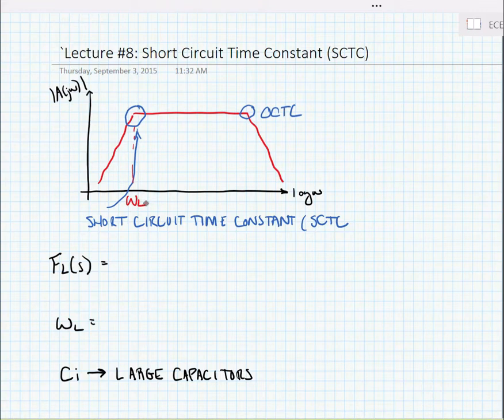Now, we're going to find a low-frequency shape factor, FL of s is equal to 1 divided by 1 plus s over omega L, and we're going to find that omega L is going to be similar to our OCTC summation of time constants, although it's going to be a little bit different for SCTC.